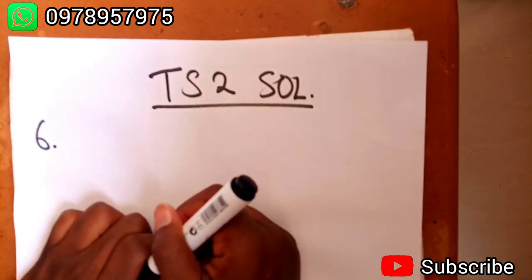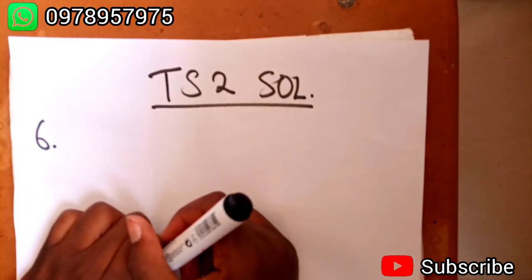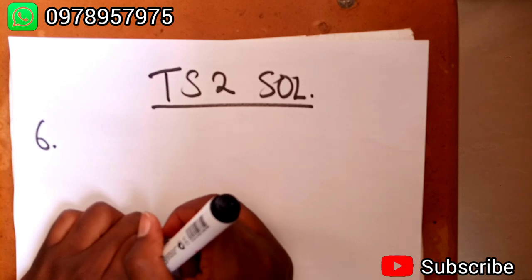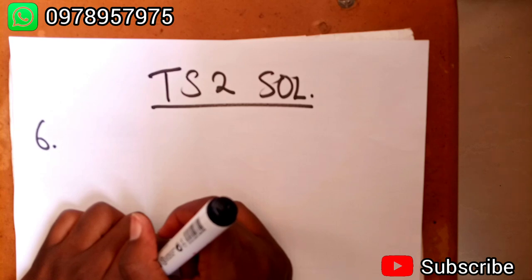I'm going to tutorial sheet 2 solutions, the last question, question 6. The helicopter view in figure P1.70 shows two people pulling on a stubborn mule. Find the single force that is equivalent to the two forces shown.